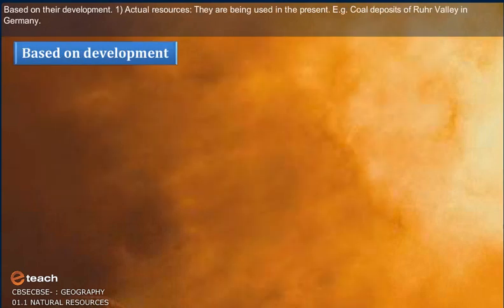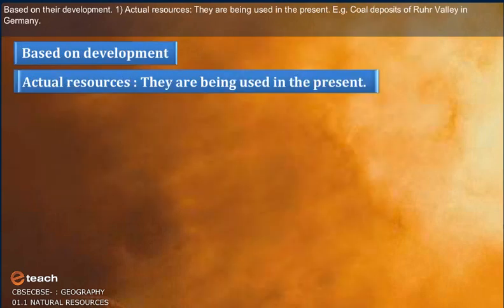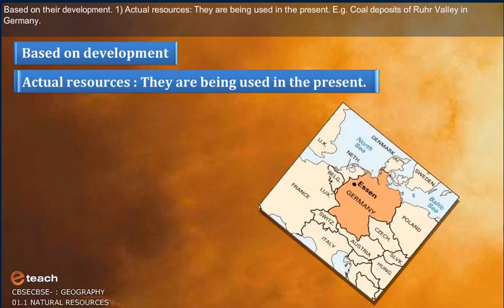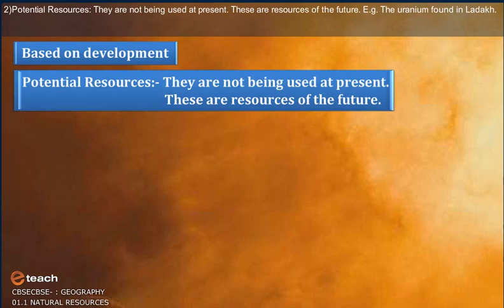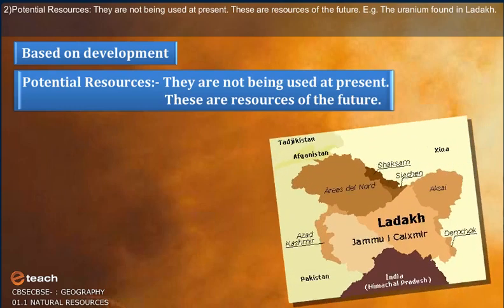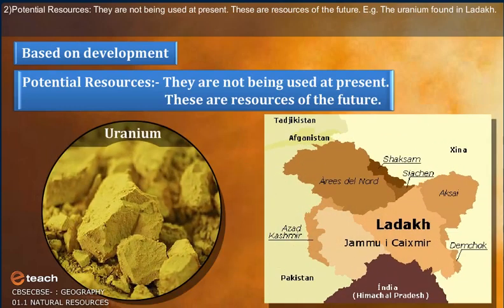Based on their Development: Actual Resources are those being used in the present. For example, coal deposits of Ruhr Valley in Germany. Potential Resources are not being used in the present — these are resources of the future. For example, the uranium found in Ladakh.